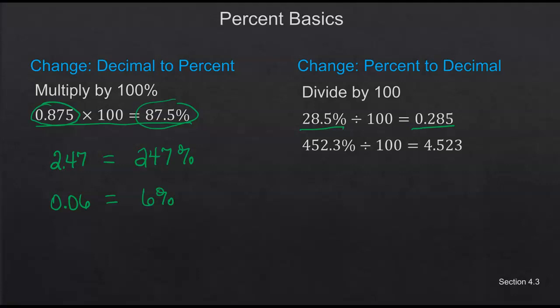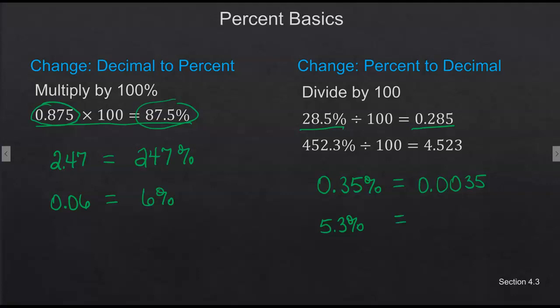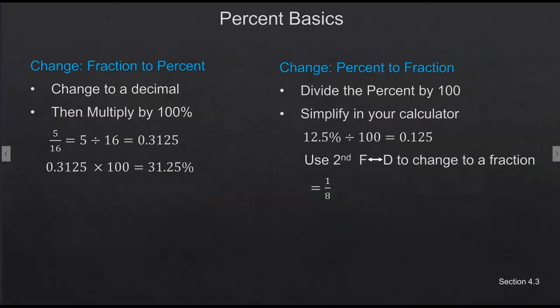Any number over one will be over 100 percent. Here are a couple more examples. This is a super small percent: 0.35 percent — when I write it in decimal form I move the decimal two places to the left, so it's 0.0035. Five point three percent: move the decimal two places to the left. You can put this on your calculator — 5.3 divided by 100 equals 0.053.